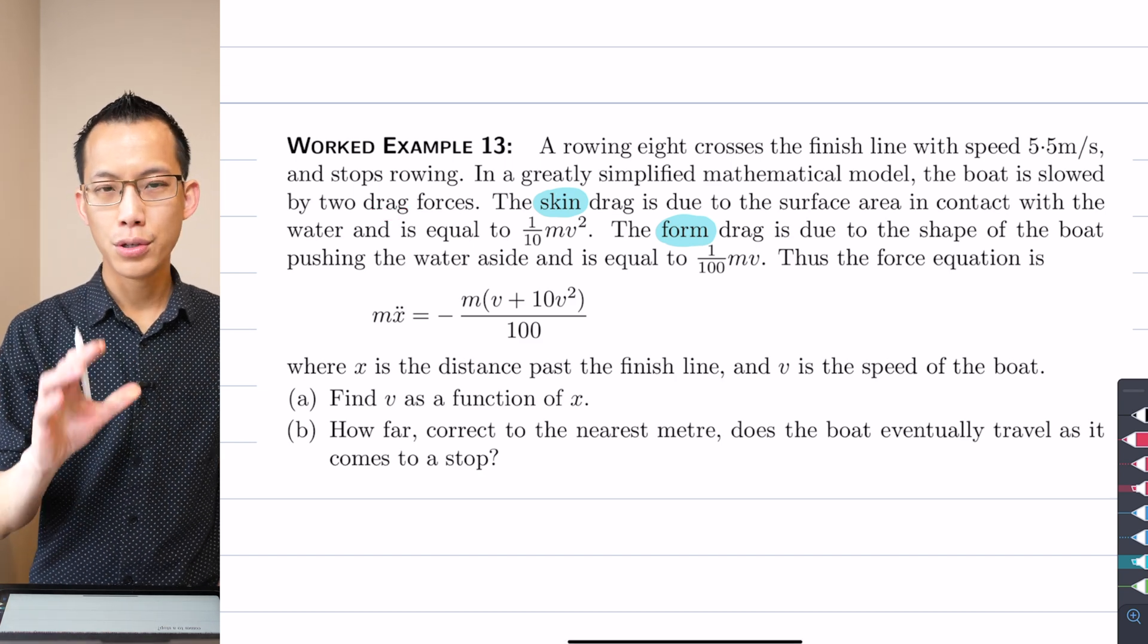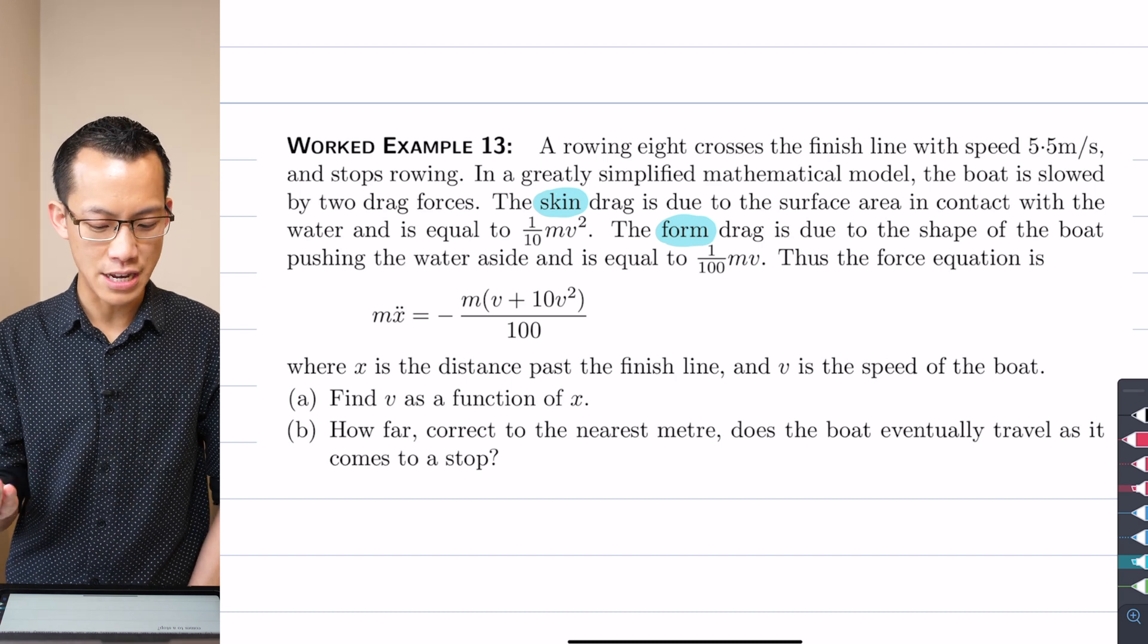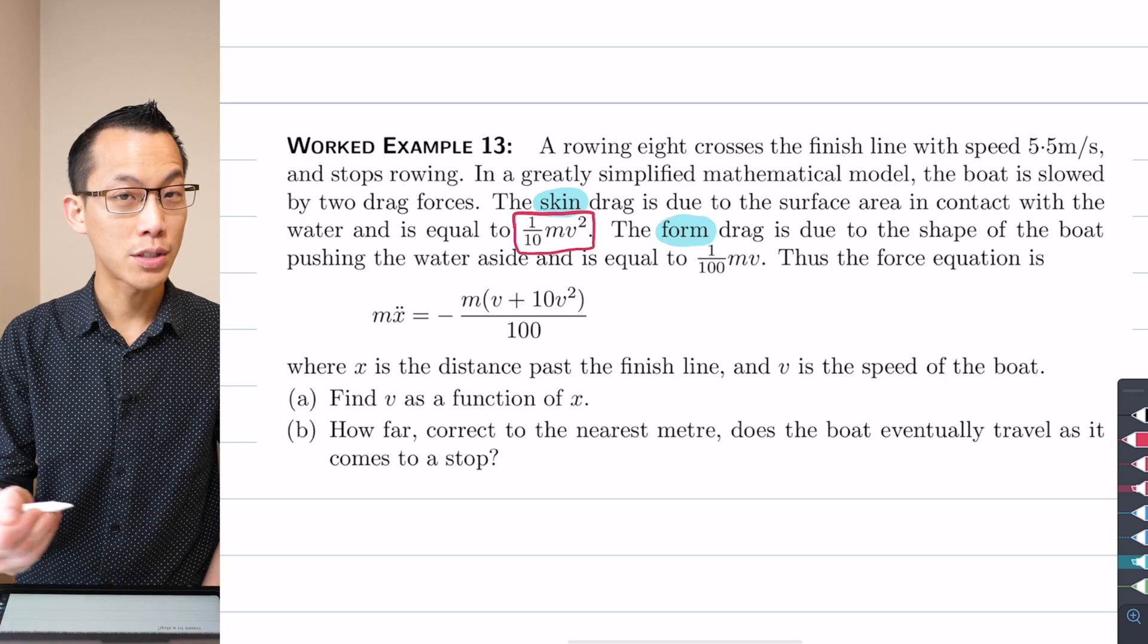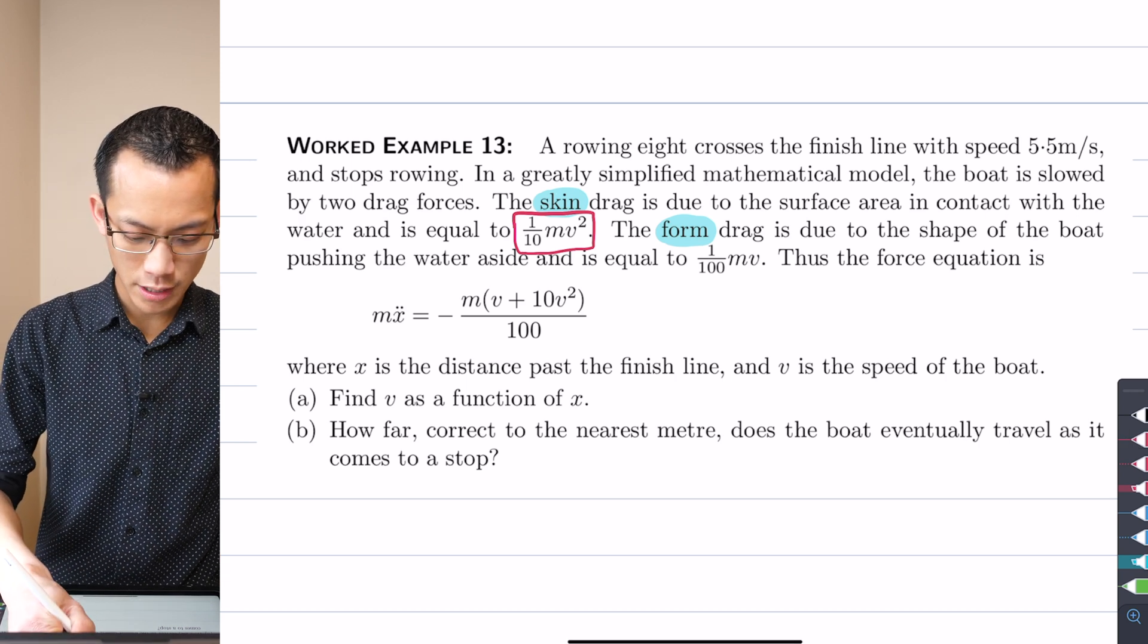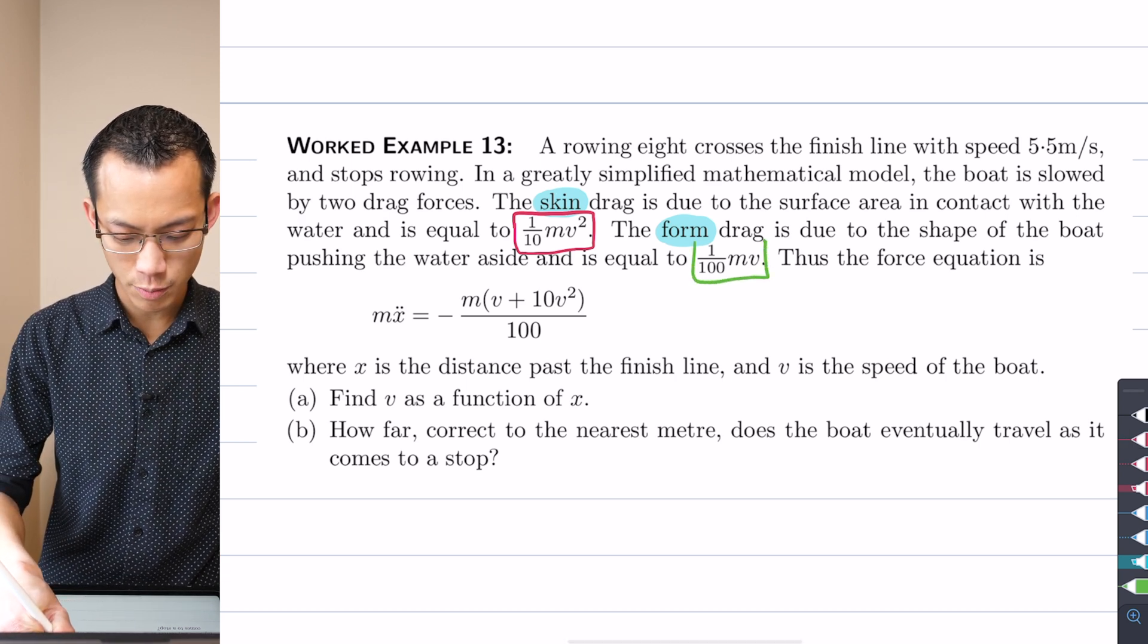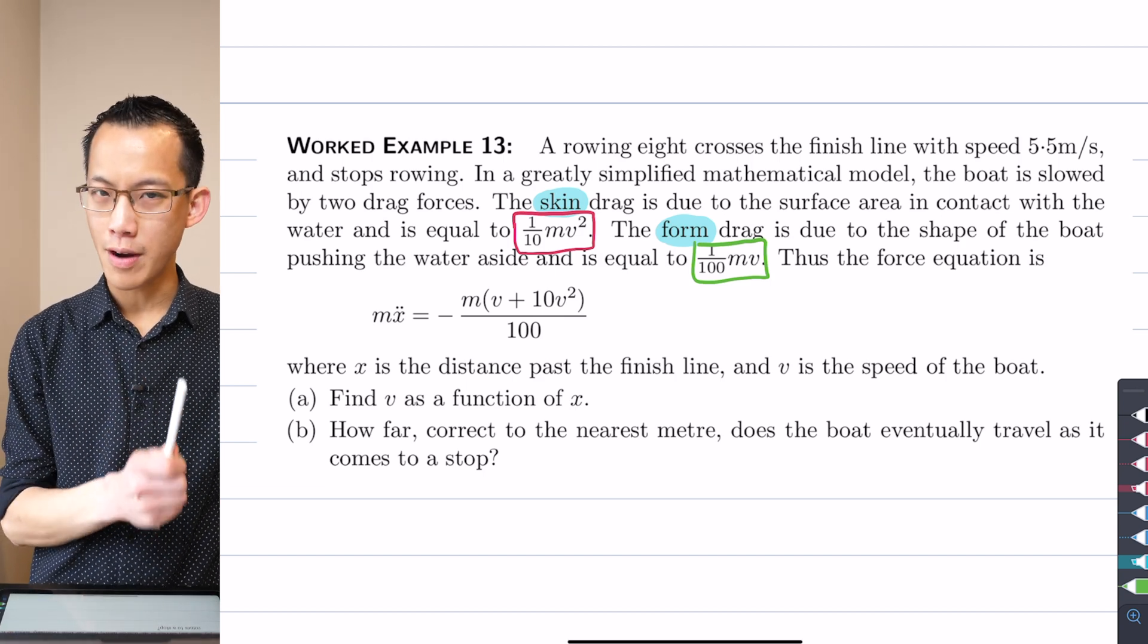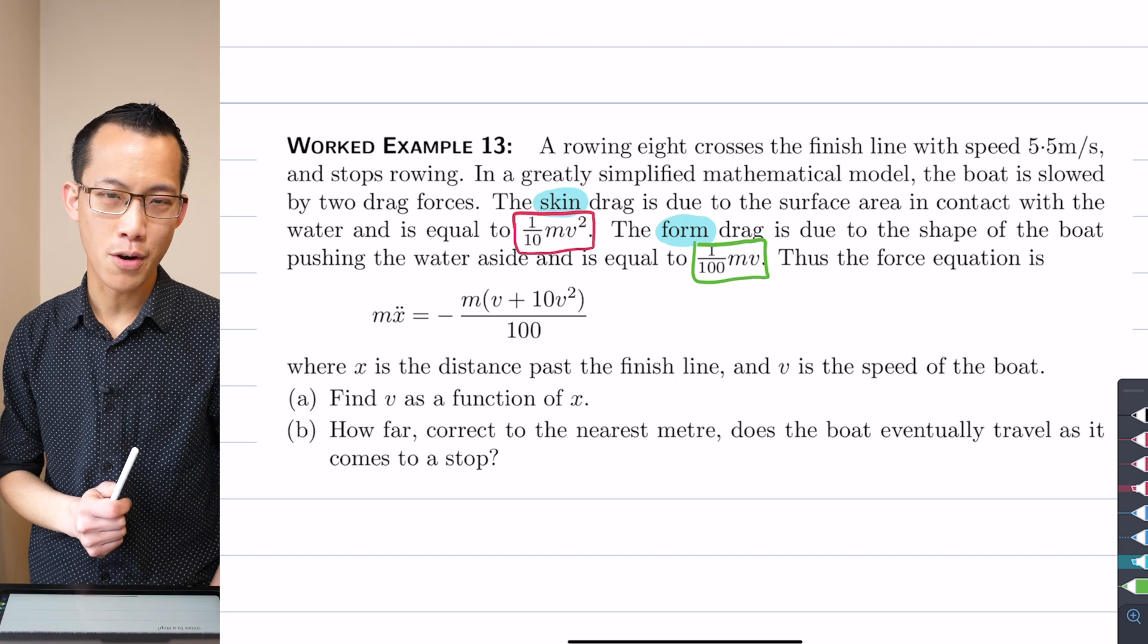So what we've got is skin drag, form drag, and then they provide to us two expressions that represent each of those respectively. So here is the expression for skin drag, and then I'm going to put this one here in green, this is the expression for form drag, and those are pretty important to write down. I would write them separately to the equation that we're about to get here.